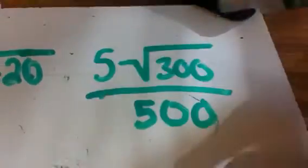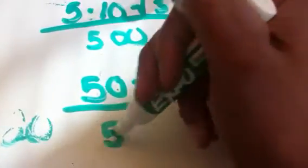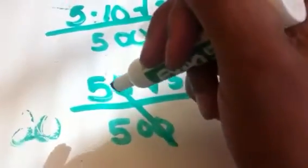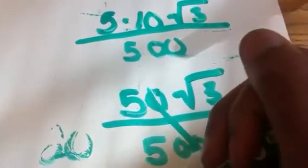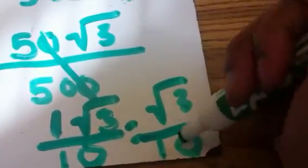Let's simplify our radical. We know that 300 is 3 times 100, so we can pull that out. It's going to be 5 times 10 times the square root of 3, all over 500. So we have 50 times the square root of 3 all over 500. That simplifies — 50 over 500 is 1 over 10. So we have 1 times the square root of 3 all over 10, which we simply write as the square root of 3 divided by 10.